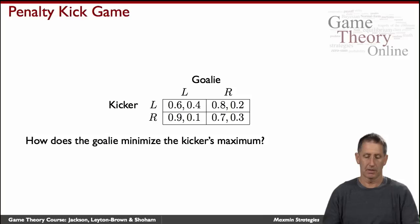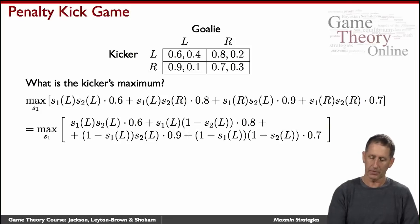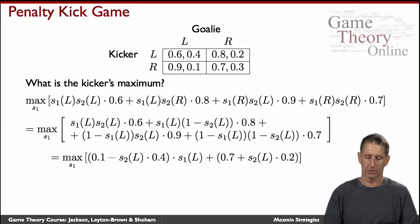What does the goalie figure out? Well, he's trying to minimize the kicker's maximum, right? That's one way to look at it. He's doing the minmax strategy. And so here is the minmax strategy for player 2. Just writing it down. And as before, we'll simply rewrite S1 of R as 1 minus S1 of L and so on for S2 of R. And we'll rearrange the term.